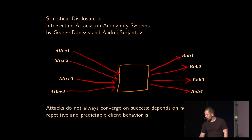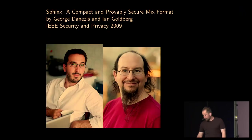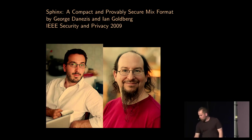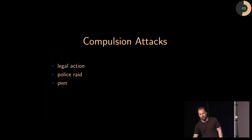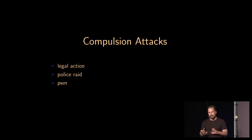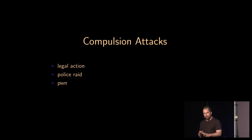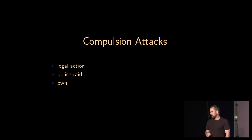Katzenpost uses the Sphinx packet format, specifically designed for decryption mix networks but also used in low-latency systems like Hornet. Sphinx was designed as a drop-in replacement for the packet format in Mix Minion, though it was never deployed as such. We have a slightly modernized version in Katzenpost using newer cryptographic primitives. Since we don't have an interactive bidirectional communication channel — we use Sphinx packets that are transformed as they traverse the network — we don't have forward secrecy properties, making us more vulnerable to compulsion attacks. In this one particular threat model, Tor is actually a bit safer than mixed networks.